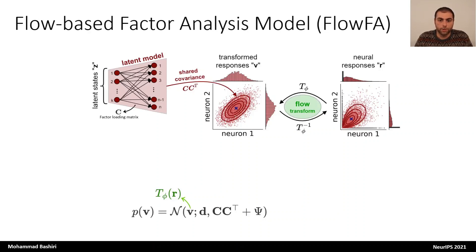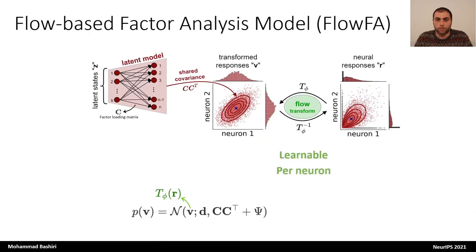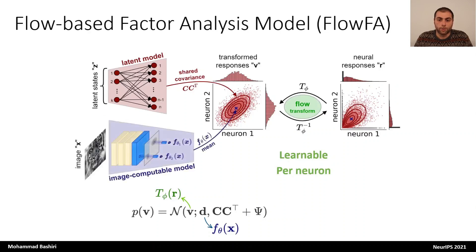To achieve this, fixed transformations such as a square root function have been used in the past. However, here we allow this transformation to be more flexible in two aspects. One is that we allow it to be learned, and two, we allow it to be neuron-specific, because the transformation applied to one neuron may not be applicable to others. And finally, we model the effect of the stimulus on the response distribution by inferring the mean of the factor analysis model as a function of the stimulus, where the function is modeled by a deep convolutional neural network.